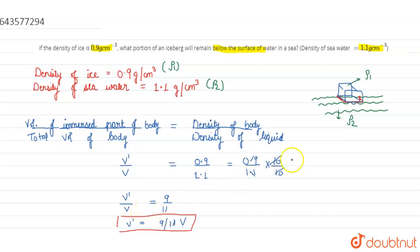So the ice floats with 9/11 of its volume below the surface of water. This is the 9/11 part of its volume. I hope you understand this. Thank you.